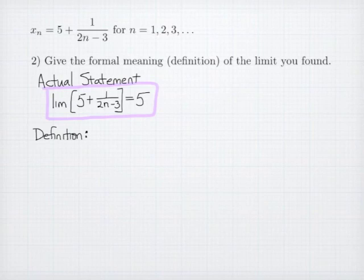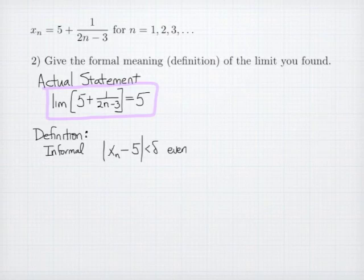The definition has to do with that inequality with distance, and so we need to state it precisely. The informal approach is what we need to remember, the idea being that the distance between my sequence and the limit is less than delta eventually, and that this is true for any delta that's positive.